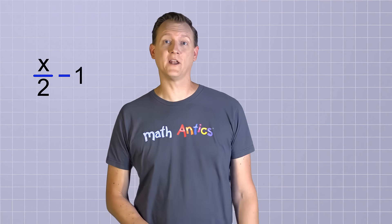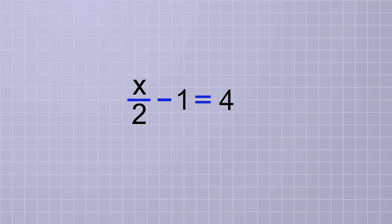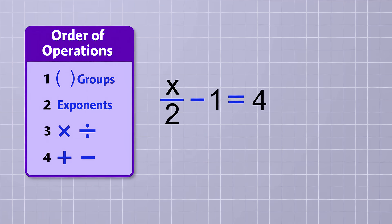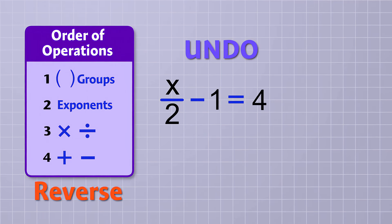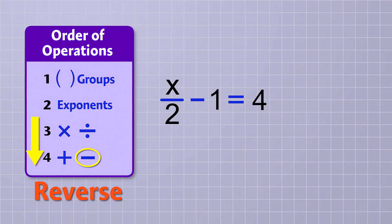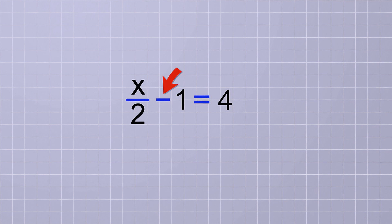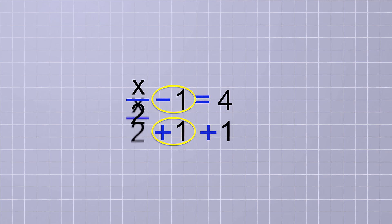That wasn't so bad! Let's try solving another simple two-step equation that has division and subtraction in it: x over 2 minus 1 equals 4. Again, we're going to apply the order of operations rules in reverse to undo the subtraction and division operations. Since we would normally do the subtraction last, we're going to undo it first. To undo the subtraction, we add 1 to both sides of the equation.